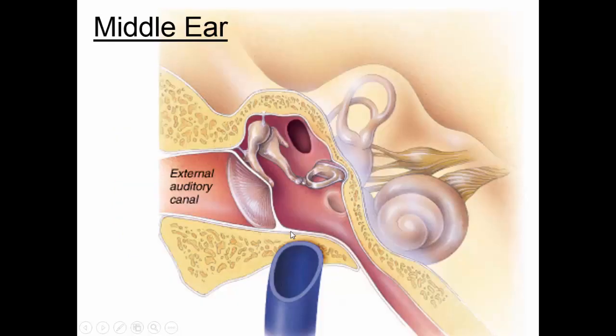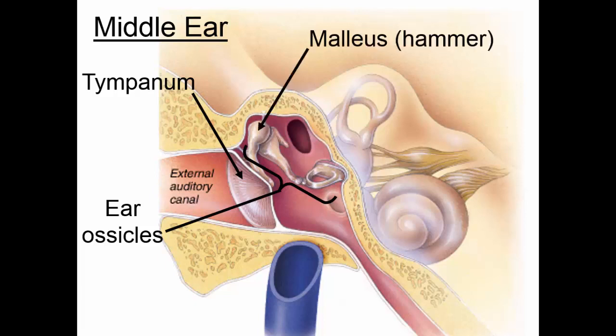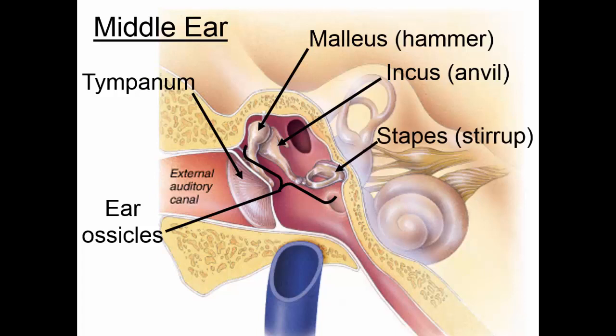In the middle ear we have the eardrum and the three smallest bones in the body, the ear ossicles: the malleus or hammer, the incus or anvil, and the stapes or stirrup.